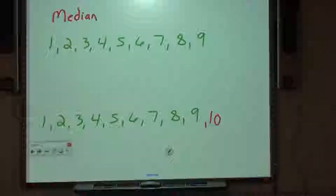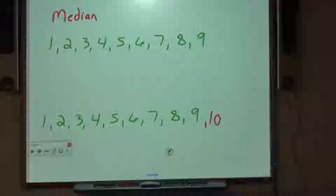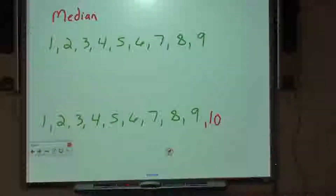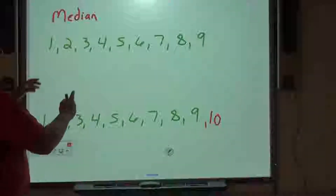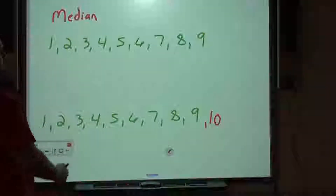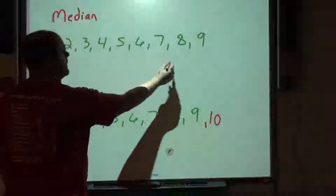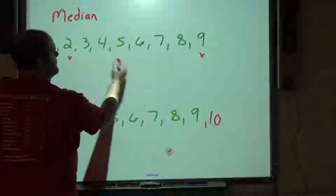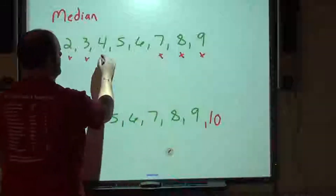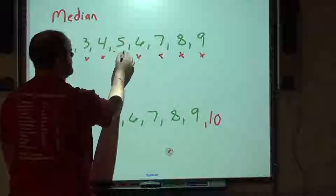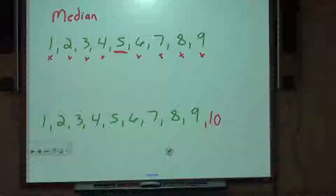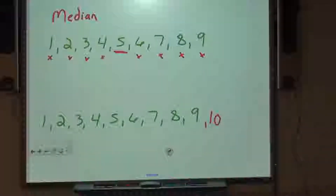The median — if you think of a median on a road or a four-lane highway — is the middle number. Very important: before you start the median, you must put the digits least to greatest. We need to find the middle term. If we start crossing off even digits on both sides, we arrive at 5 as our median. The mean and the median can both be the same thing, and right now they are.